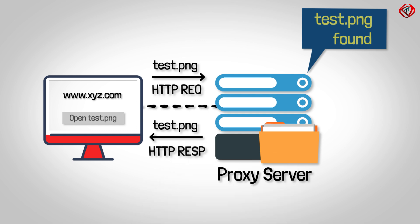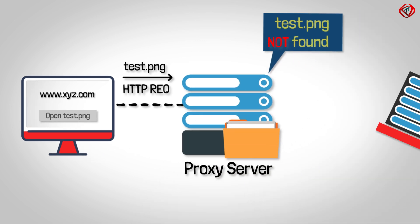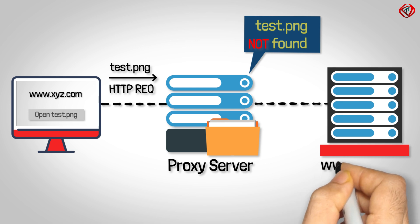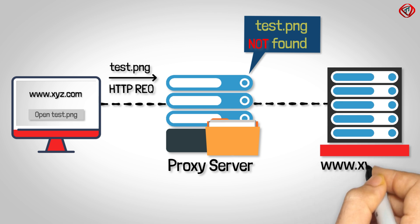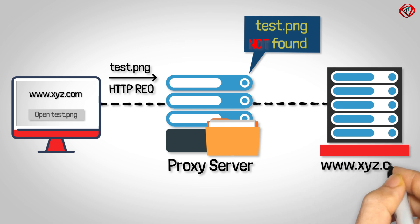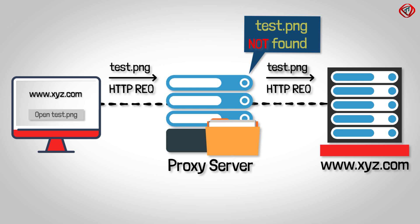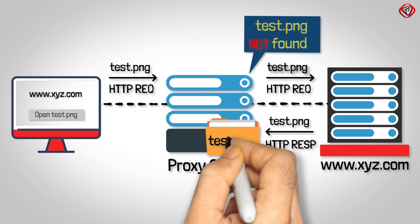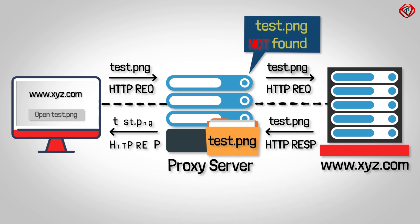If the proxy server does not have the file, it connects to the original website www.xyz.com and asks for the file. Once the proxy server gets the file from the original website, it saves a copy and sends the file to the web browser.